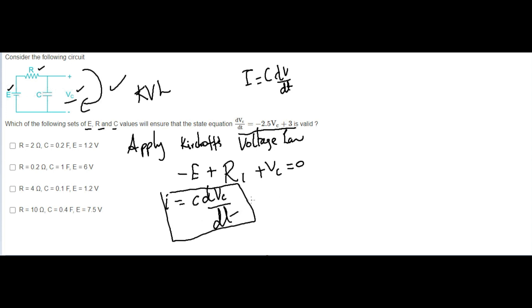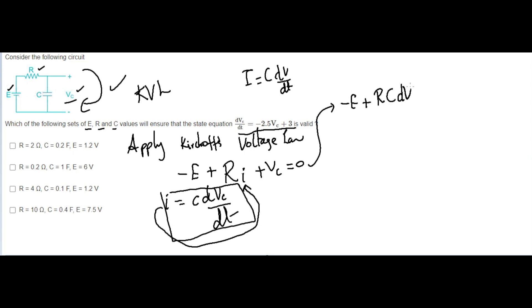So now I apply this substitution. R·i becomes R times C times dVc/dt. Substituting into the KVL equation, it goes to: minus E plus R·C·(dVc/dt) plus Vc equals zero.